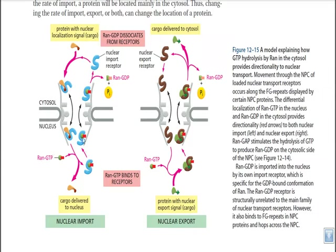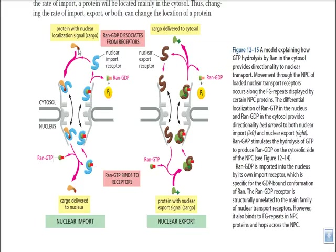The target protein is now free inside the nucleus. The receptor protein — bound with RAN GTP — travels from the nucleus into the cytosolic environment via the nuclear pore complex again. When it goes outside the nucleus into the cytosolic environment, RAN GTP is hydrolyzed by the GTPase activating protein, or GAP. The GAP hydrolyzes the GTP bound with RAN, converting it to RAN GDP. RAN GDP is then released from the receptor protein, and the receptor protein is free to bind with another target protein molecule.